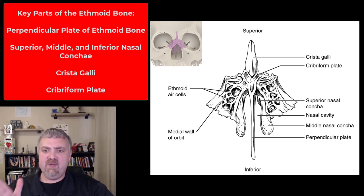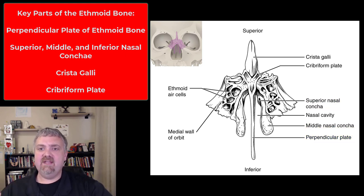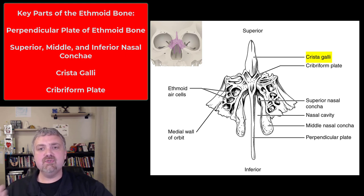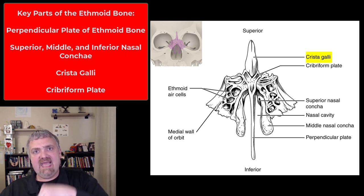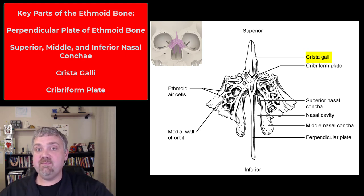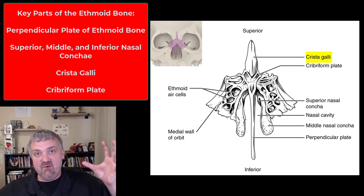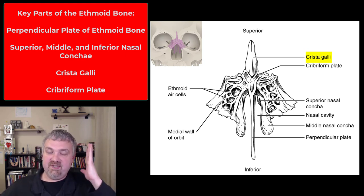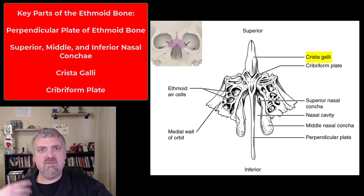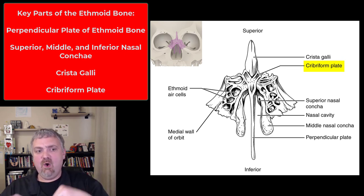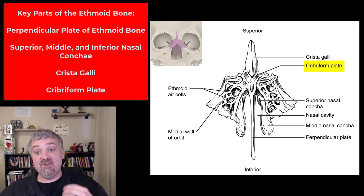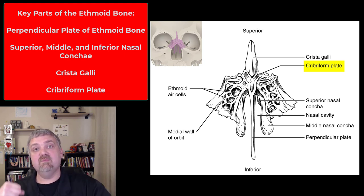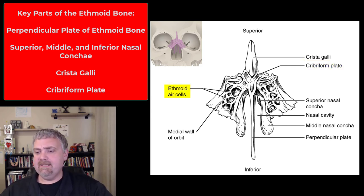Here we see the ethmoid bone. We've covered the perpendicular plate (part of your nasal septum) and the nasal conchae. The top portion of the ethmoid bone has the crista galli and the cribriform plate. The crista galli — meaning rooster's comb — is a bony projection and attachment point for part of the brain covering called the falx cerebri. This is important for concussions: the connected tissue can send shock waves to the center of the brain, impacting hormones and more. The cribriform plate has tiny holes for the olfactory nerve — sensory receptors from inside your nose travel through to the olfactory bulb so you can smell. The ethmoid air cells are a type of sinus.